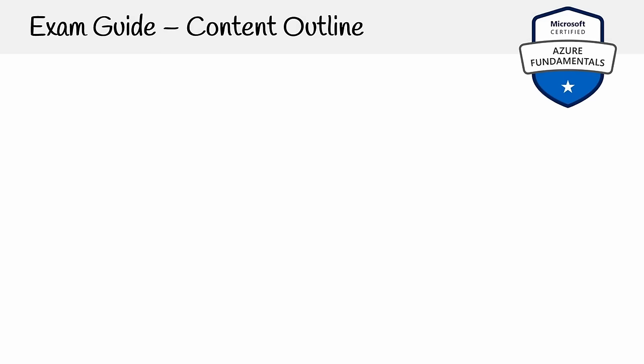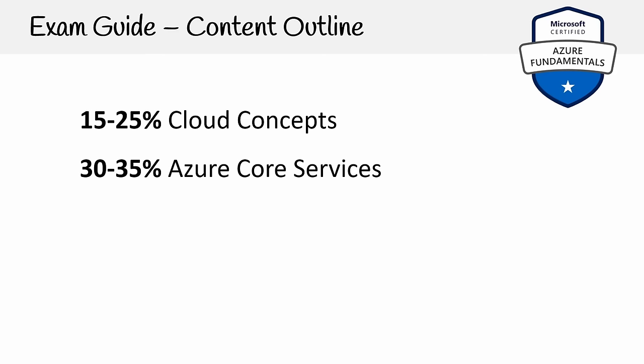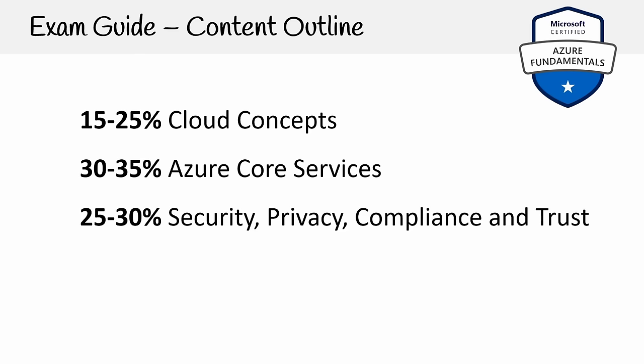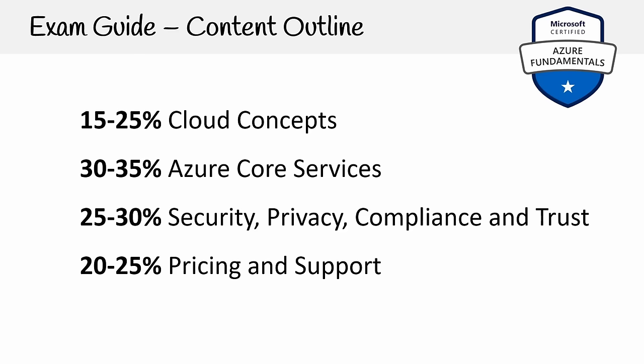Now let's take a look at the exam guide and break down what we need to do to pass. The content outline covers the general domains: cloud concepts is 15 to 25% of the exam, Azure core services is 30 to 35%, security, privacy, compliance and trust is 25 to 30%, and pricing and support is 20 to 25%. Note that these are ranges — it's not a guarantee that exactly that percentage of questions will come from each domain.